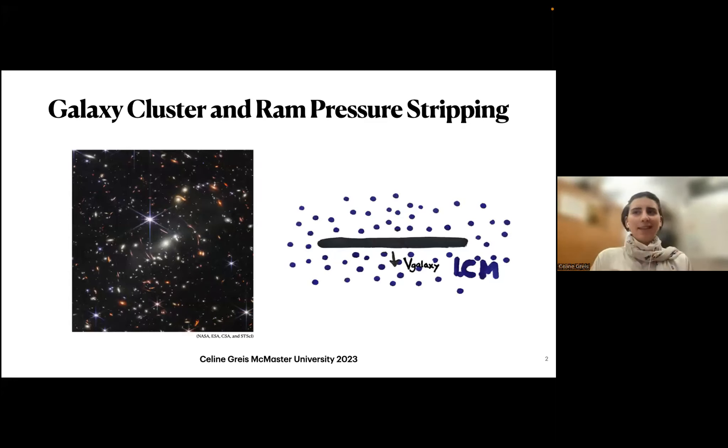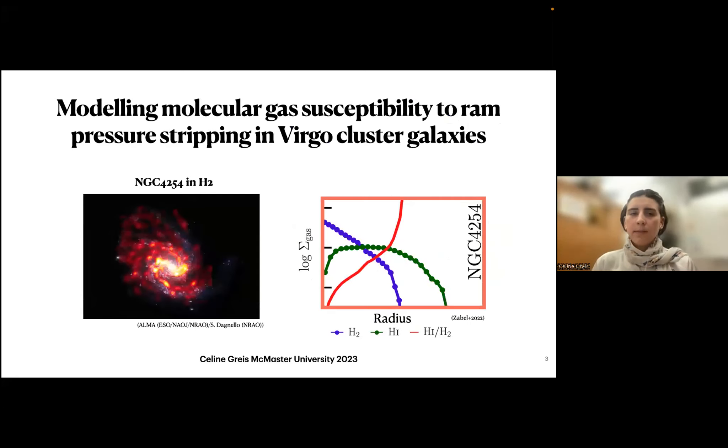In the past, there has been done a lot of research on ram pressure stripping and how it affects the gas of a galaxy. Most of it has been done on H1, the atomic hydrogen. You can see on the right side, for example, in this plot, the profiles of atomic and molecular hydrogen. They have very different profiles. Molecular hydrogen is far denser and more centered around the center of a galaxy, compared to atomic hydrogen, which is more volume filling, more homogeneous and has less substructures.